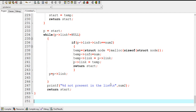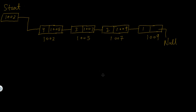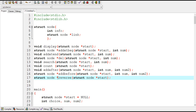In this video I will show you how to reverse a linked list. This is the first node, this is the second node, this is the third node, and this is the fourth node. After reversing this list, the last node should become the first node, the second-to-last should become the second node, and the first node should become the last node in the list.